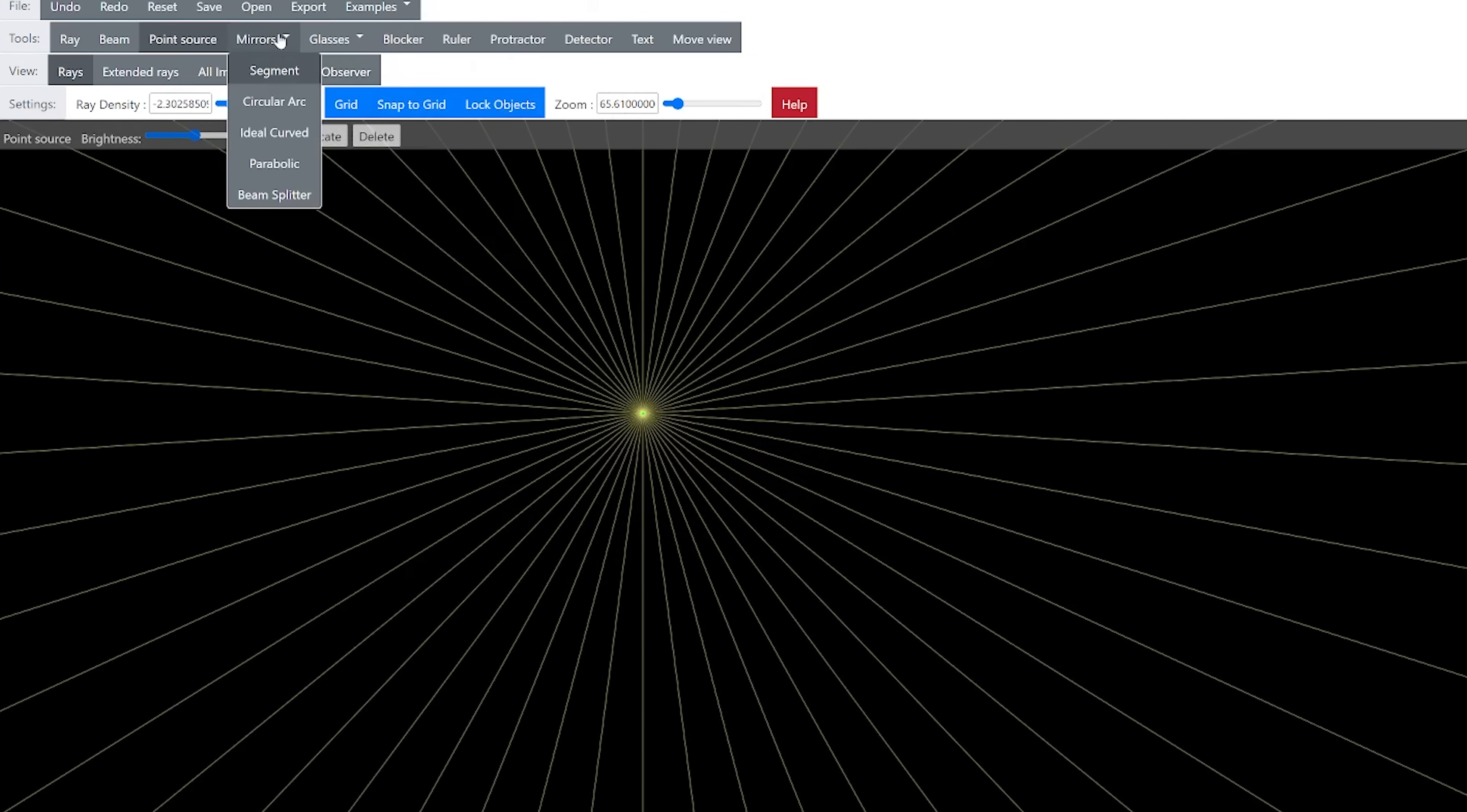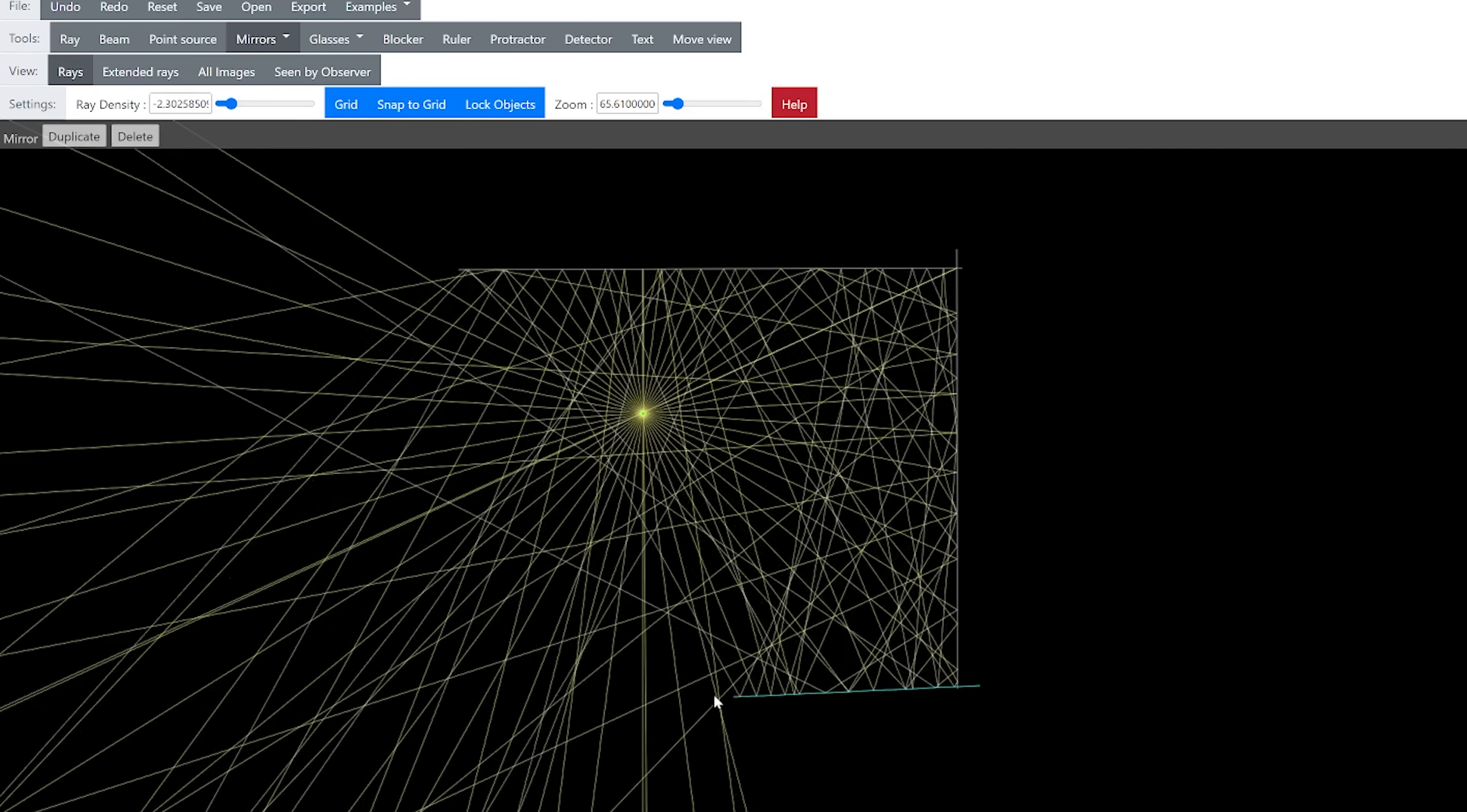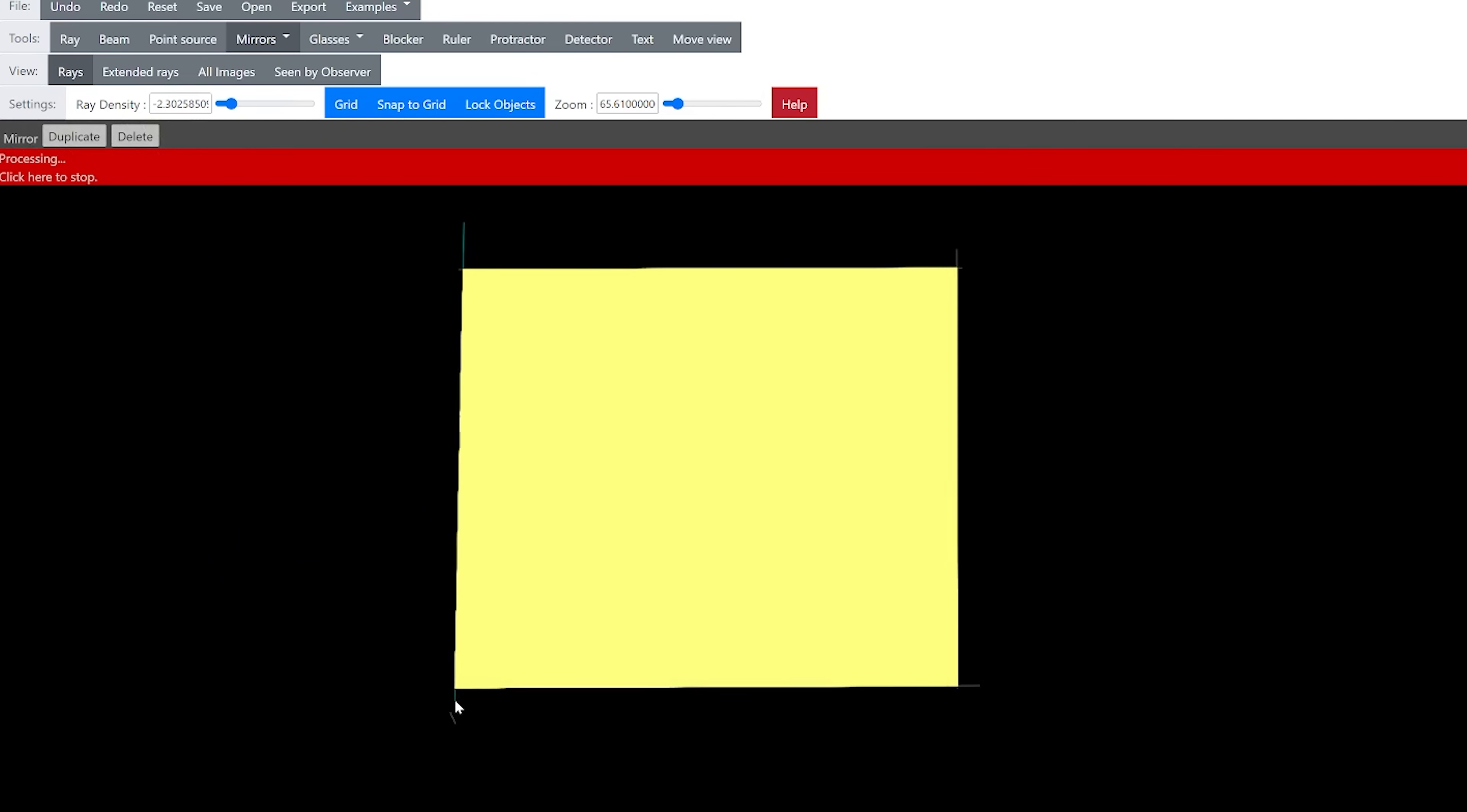You can see if I use this ray simulator online, that I can put a box around this point source of light. And as soon as I enclose it, then the entire room gets lit up, no matter where I put the point source of light.